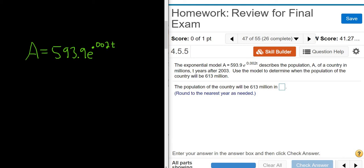So if we plug in 0, it's 0 years after 2003. So if you plug in 0, you actually get the population in 2003. If you plug in 1, you get the population in 2004. If you plug in 2, you get the population in 2005, etc.